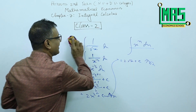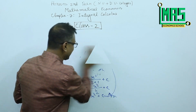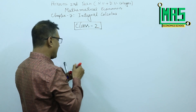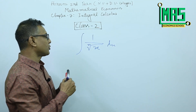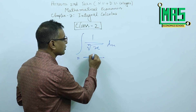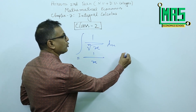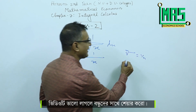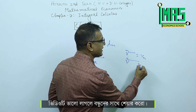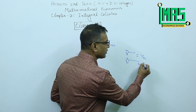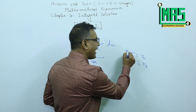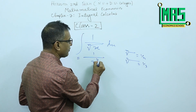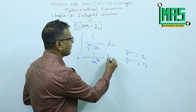We have learned this rule, and it is a simple rule to apply. Now, what is the n-th root? The n-th root of x is x to the power 1 by n. What is the cube root? It is x to the power 1 by 3. So we can write x to the power 1 by n, and the integration of x to the power 1 by n dx.